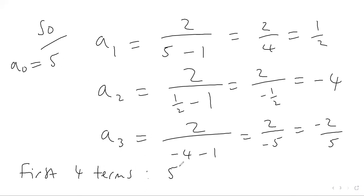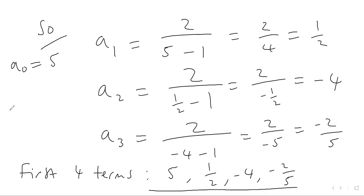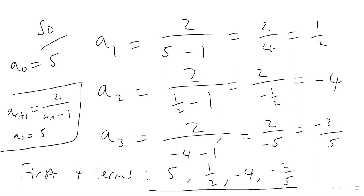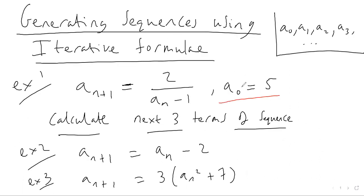So the first four terms of the sequence are: five (given in the question), then a half, then negative four, then negative two-fifths. That's how we generate the first four numbers in this sequence, specifically a_(n+1) equals two over a_n minus one, starting with a_zero equals five. You have a number, plug it into the formula, get the next number, and keep repeating.